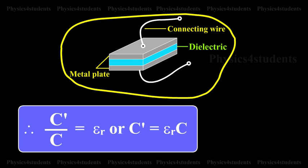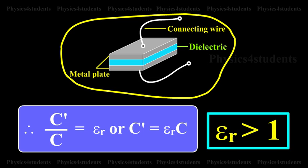Therefore, C dash by C is equal to epsilon r, or C dash is equal to epsilon r into C. Since epsilon r is greater than 1 for any dielectric medium other than air, the capacitance increases when dielectric is placed.